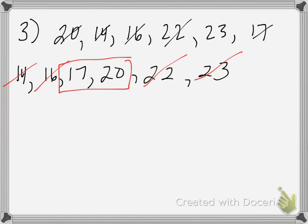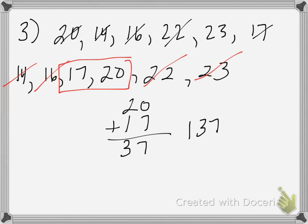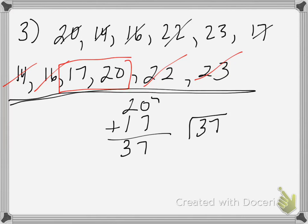Because we have two numbers in the middle, we need to find the mean of those two numbers. We add them up: 20 plus 17 is 37. Then we divide 37 by the number of items in that set — just 2 numbers — to find the mean.